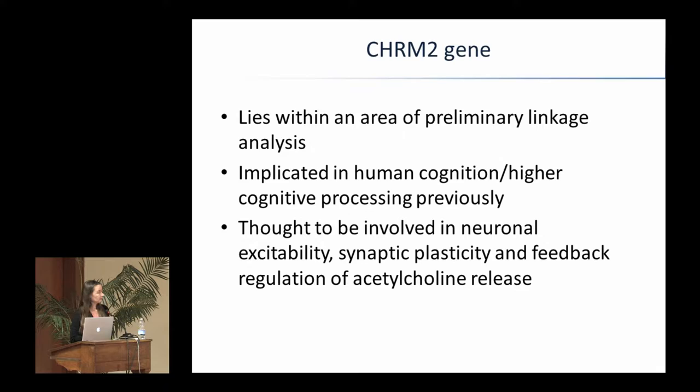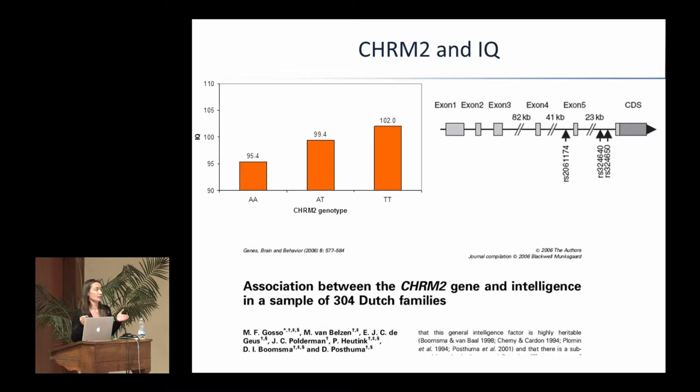We decided to genotype variants in the CSRM2 gene in the samples we had in our lab. We found that one SNP — an AT polymorphism — was associated with IQ. People with two A alleles had a lower IQ than people with the double T. This was a significant association, so we published it. Of course, this was almost ten years ago — now we would say it's only 300 people, so how could you believe this result?